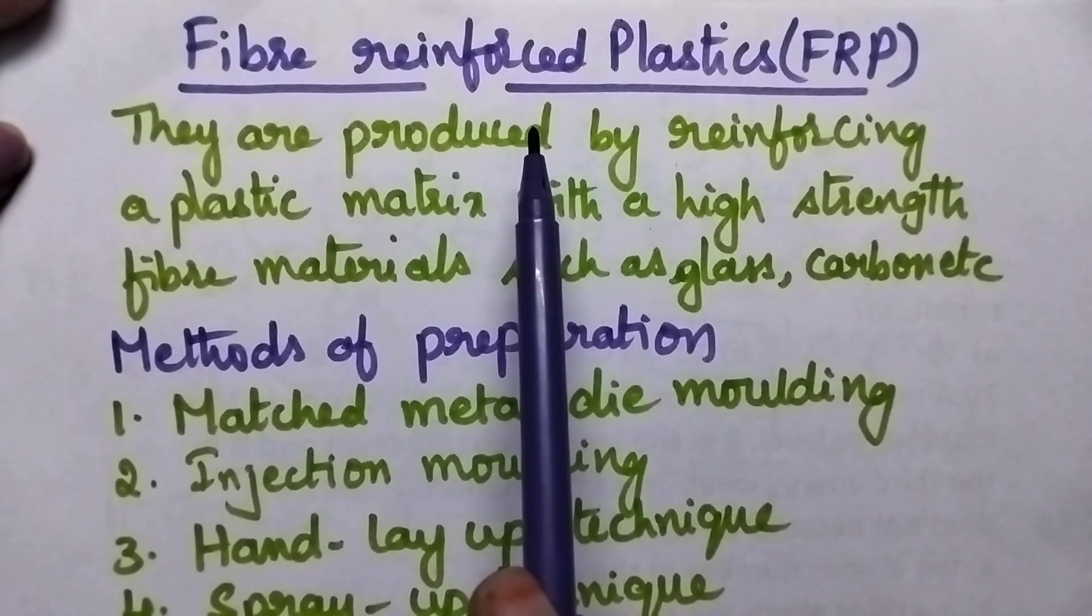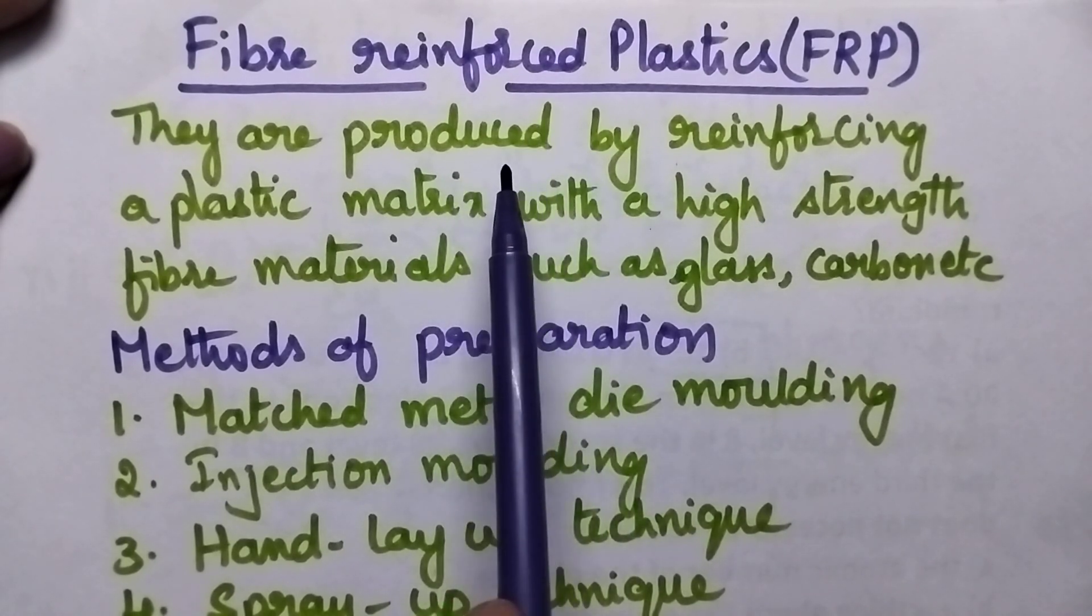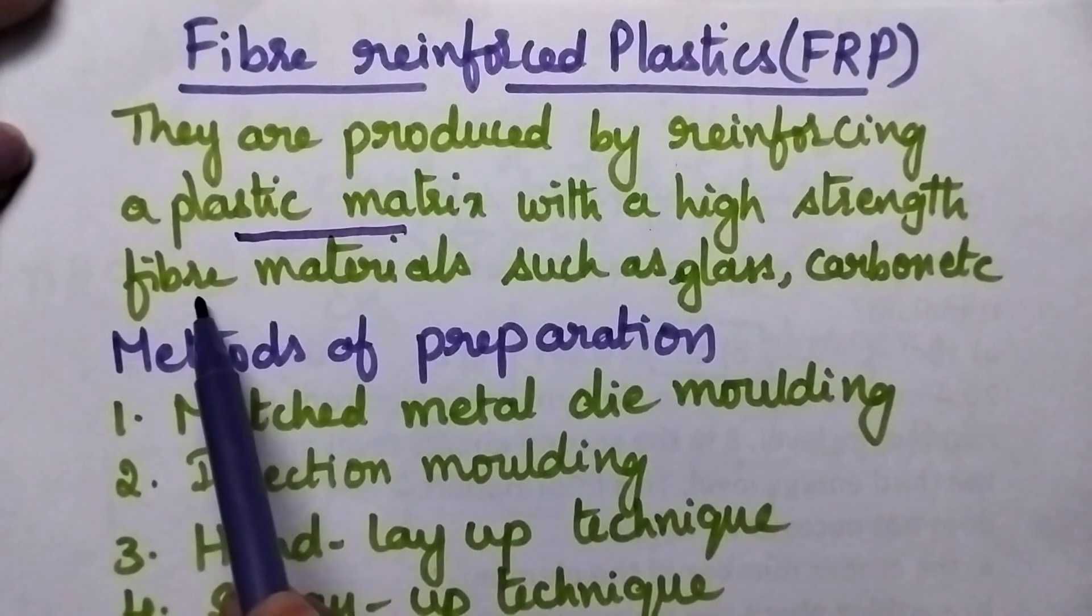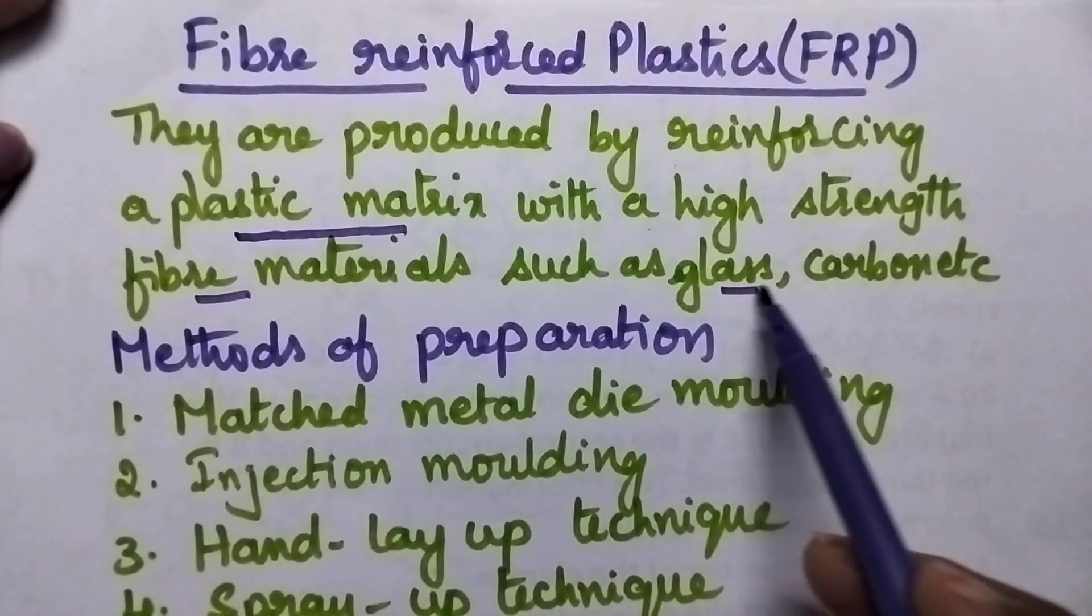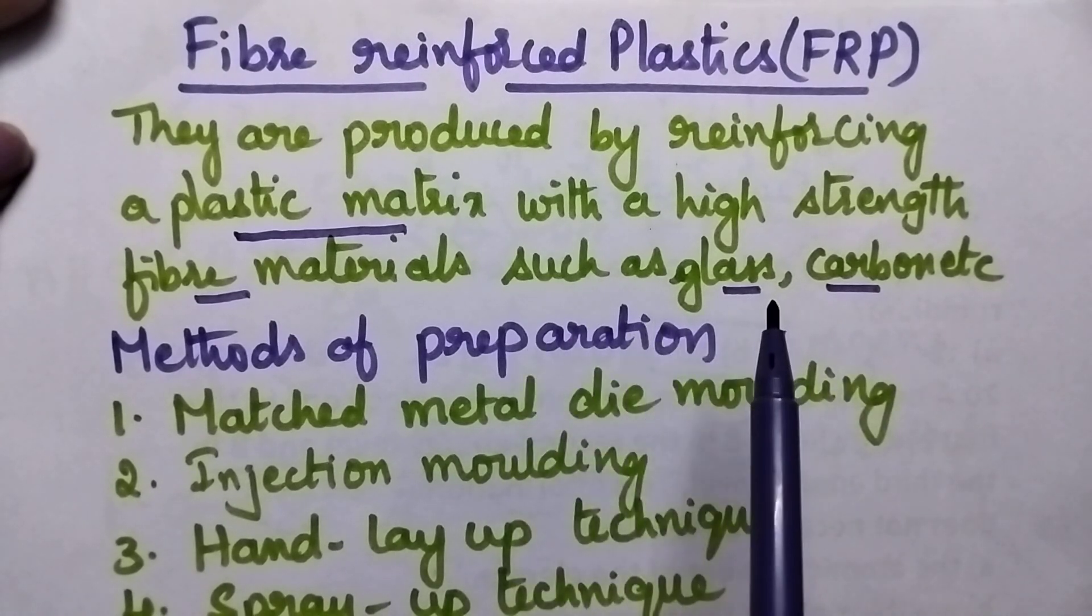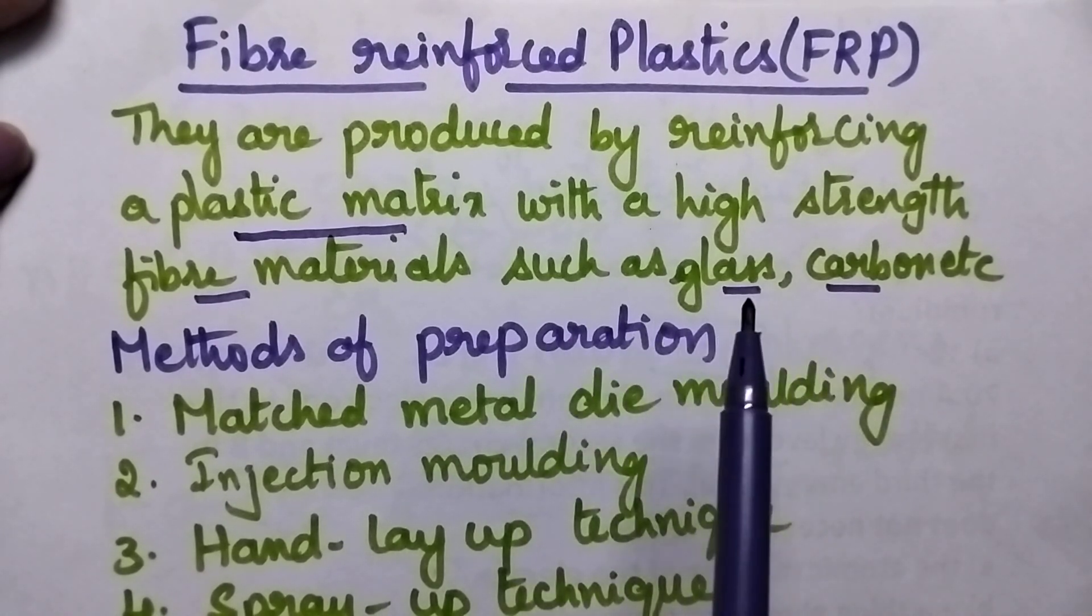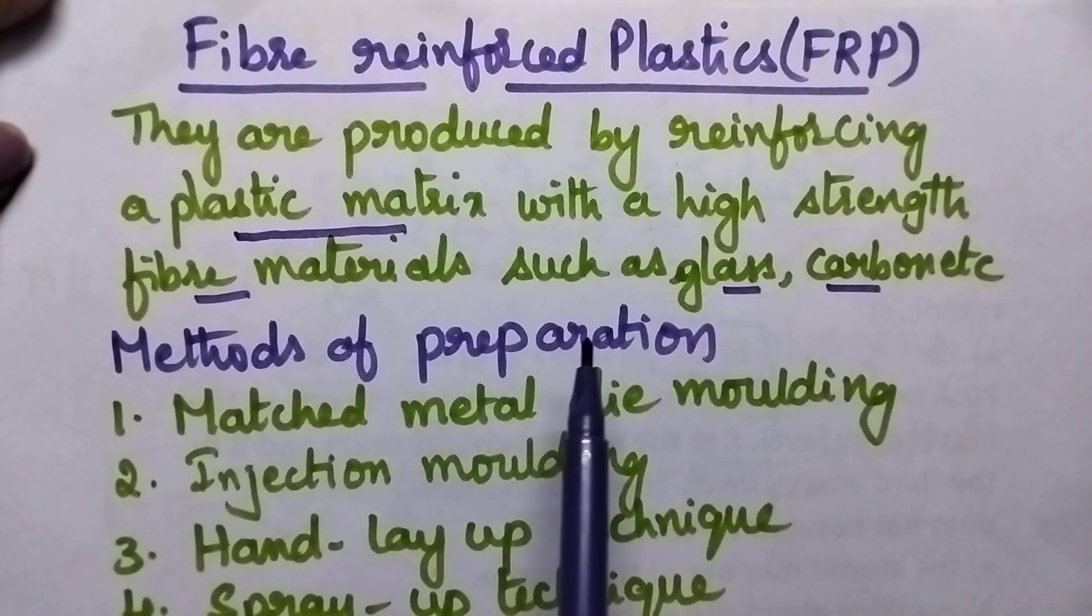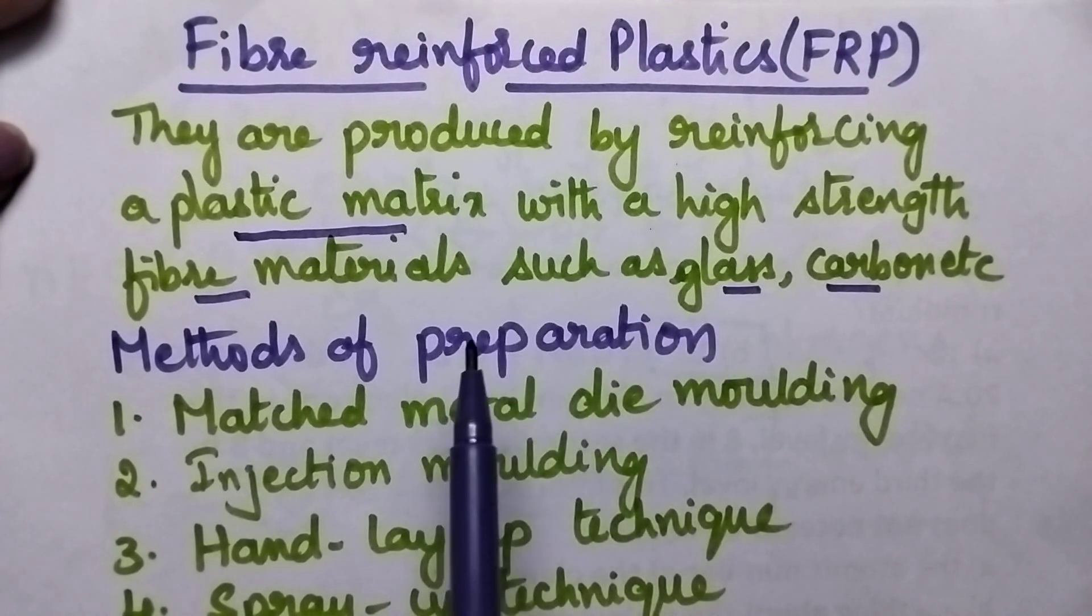They can be prepared by reinforcing a plastic matrix with fiber materials such as glass and carbon. These fiber reinforced plastics are known for their tensile strength along one direction and can be prepared by mixing the plastic matrix with the fiber.